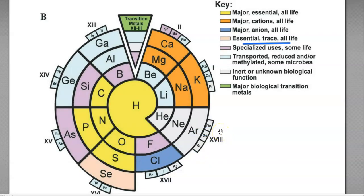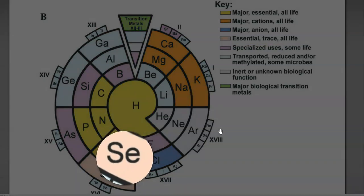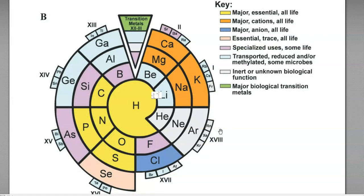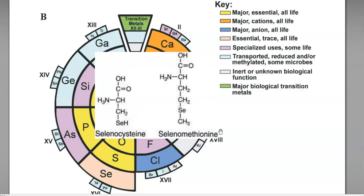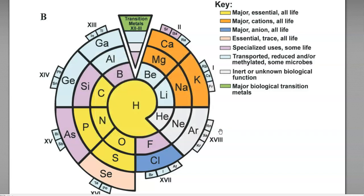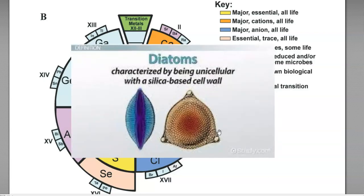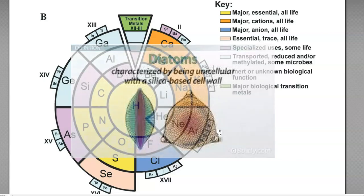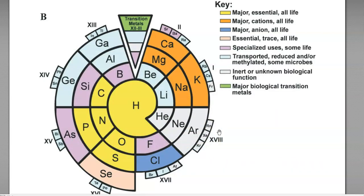Next, we look at the essential trace elements for life. The very essential trace element is selenium, which is required for the synthesis of the specific amino acid selenocysteine. Apart from that, certain elements play specialized roles in cells, including boron, fluorine, and silica. For example, silica is required for the formation of the cell wall of diatoms — the coating on the cell wall is made with the help of silica frustules.